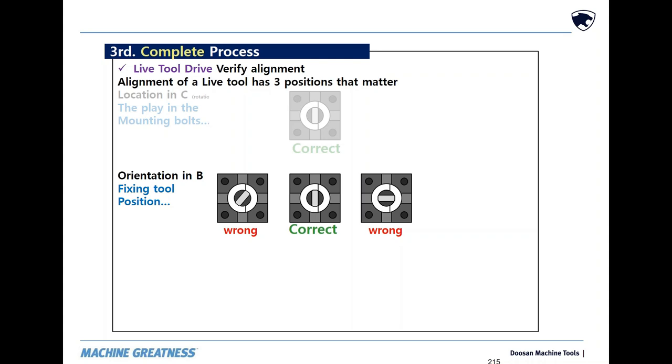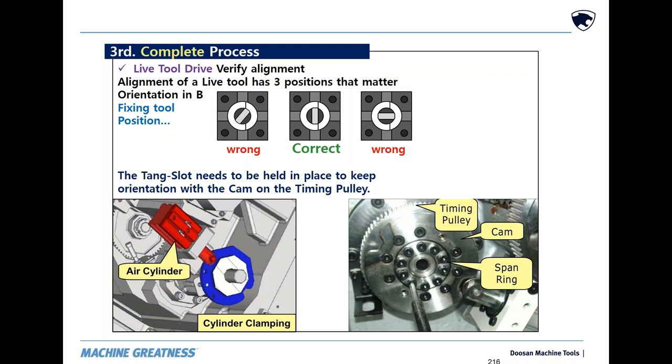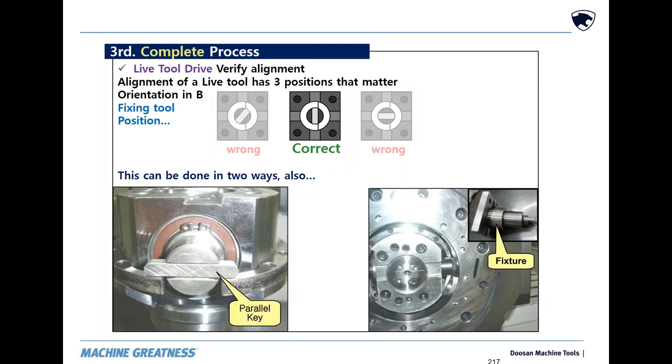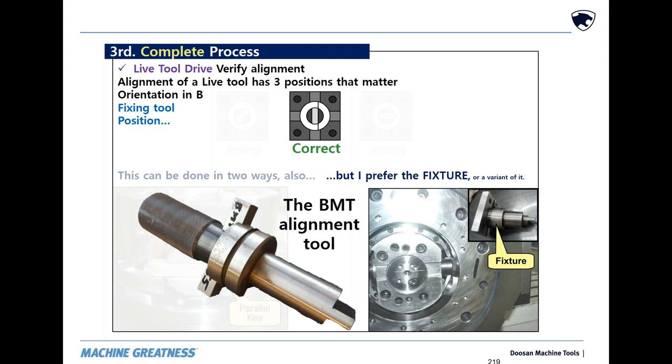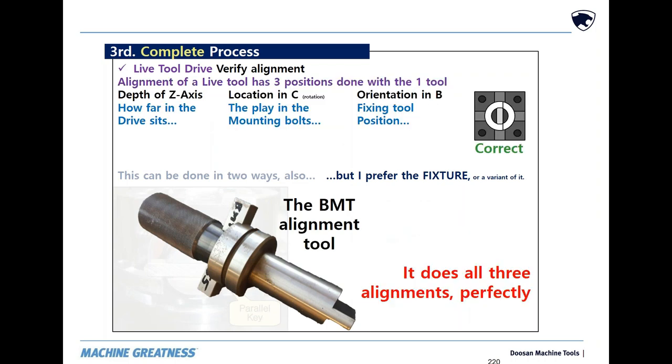The final alignment of the three positions is the drive orientation. This is a two-step process. One step is mechanical and the other is a parameter adjustment. The tang slot needs to be held in place to keep orientation with the cam on the timing pulley. A piece of key stock works well for holding the tang, but the preferred solution is this fixture, or its variant, the BMT alignment tool. It does all three measurements and it does them faster. We have them available for loan to Doosan dealer personnel who might not have their own.